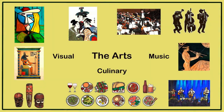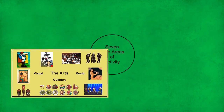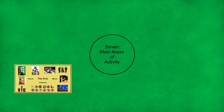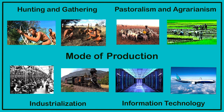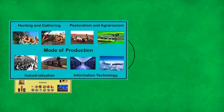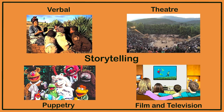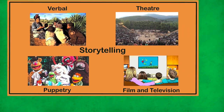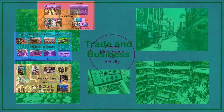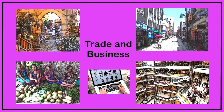There's the arts, which include the visual, music, and culinary arts in all their many and varied forms. There's the mode of production of a culture, which is the way in which a population collects, processes, and distributes resources — varying from hunting and gathering to pastoralism and agrarianism to industrialisation and an information economy. Next we have storytelling, which can take the form of verbal storytelling, theatre, puppetry, or film and television. We also have trade and business activity with all its many and varied marketplaces, including the online marketplace of today.